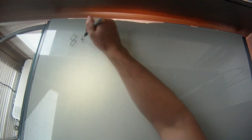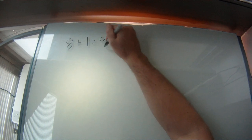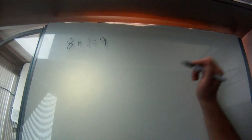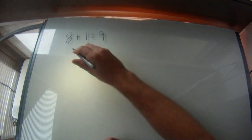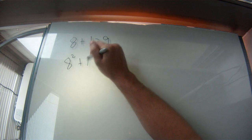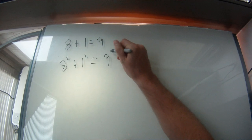So let's say for instance that I have 8 plus 1 equals 9. We all know that that's true. So what everyone wants to do here is when you square this, you want to just square both elements. So that would mean that 8 squared plus 1 squared equals 9 squared.